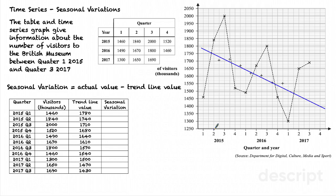I go along to the next quarter, 2015 Q2, up until I reach the trend line and I read the value — that is 1740. And I continue for every quarter reading from the trend line. The seasonal variation is the original data value minus the value I've read from the trend line. So in the first case, it's 1460 minus 1780, and that is minus 320.